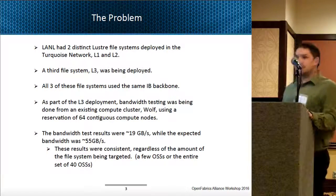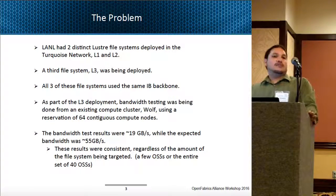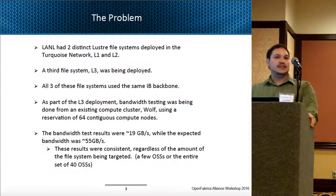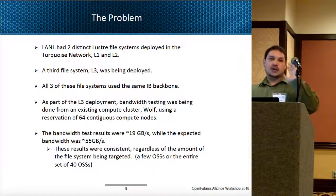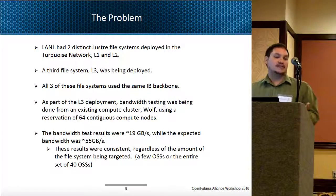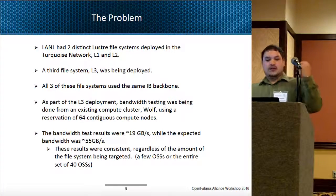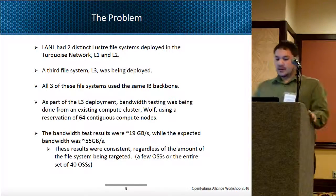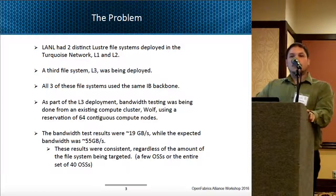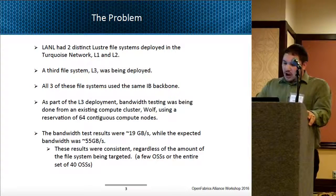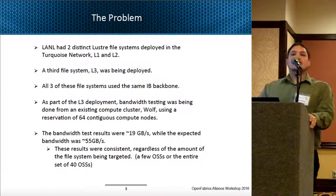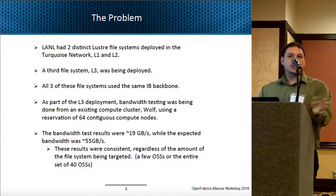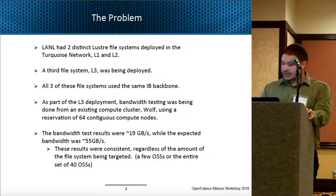We began with L3 since it was the new one, and during that testing we ran into a huge issue. We expected about 55 gigabytes a second worth of performance between that cluster and the file system, but we were seeing only about 19 gigabytes a second. This was based on the node allocation we had at that time. The routes were consistent — it didn't matter the size of the job, the node allocation, or the size of the file system being used; the result was pretty consistent.